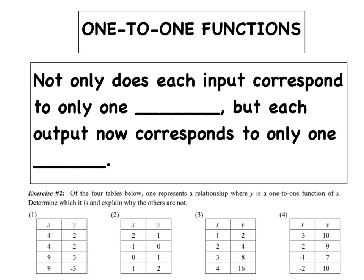Here's our first big definition for today: one-to-one. A one-to-one function means not only does each input correspond to only one output — that's how we define a function — but now each output also corresponds to only one input. Instead of being a one-way street, it's a two-way street. Not only does each x map to only one y value, but also each y value maps to one and only one x value. We really can't have any double dipping on either side of the table or the mapping.